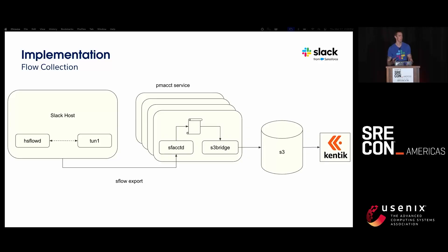We annotate flows in groups that are actually interesting from a failure domain perspective. Once we've done that log annotation, we write it out as parquet files to S3 in the exact same file format as AWS VPC flow logs. We then pass this to a third-party tool called Kentik for additional analysis, though you could run your own data warehouse and query this data as well.